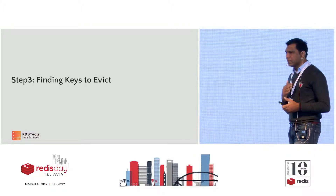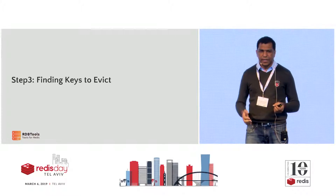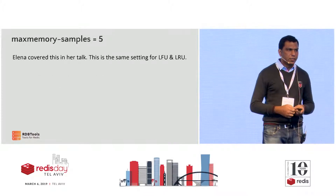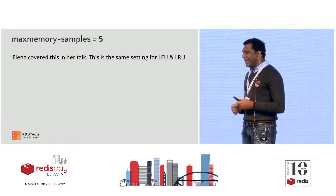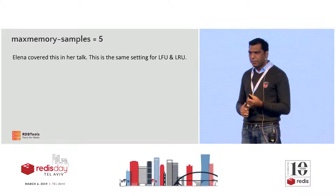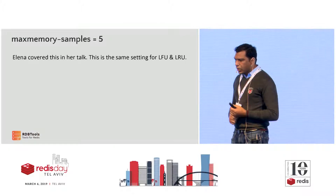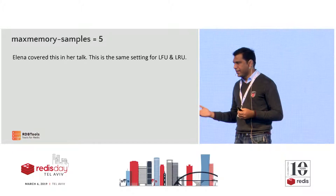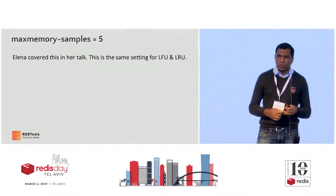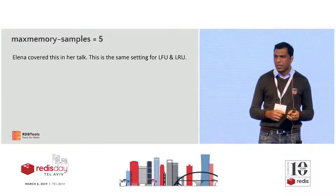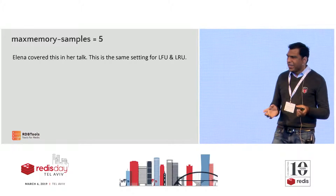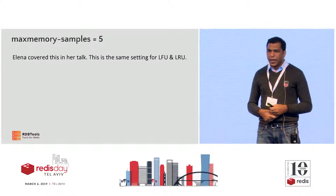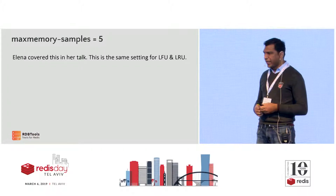We looked at how Redis increments the counter and decrements it over time using two parameters. The next step is finding keys to evict. The only difference between LRU and LFU is how the score is calculated. The same max memory samples parameter is used. For LRU, you evict keys with the highest idle time; for LFU, you want keys with the lowest counter. Redis does simple arithmetic: 255 minus the counter, and you maximize that score. Max memory samples works the same way as Alina explained, just with a differently calculated score.